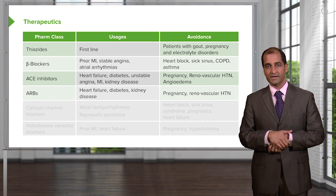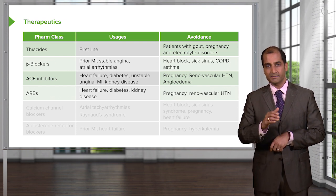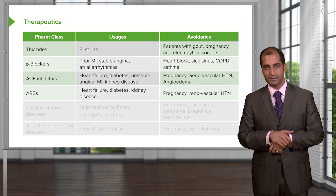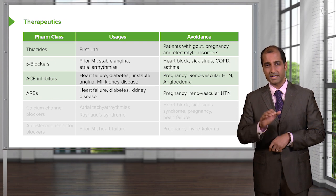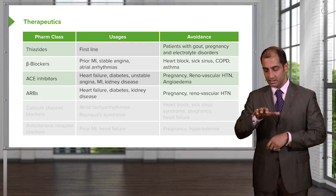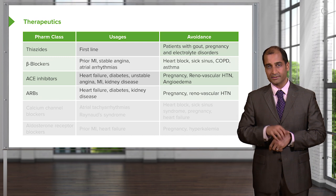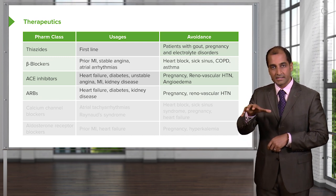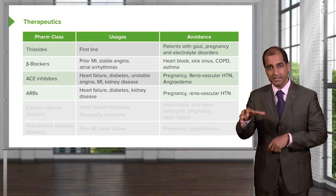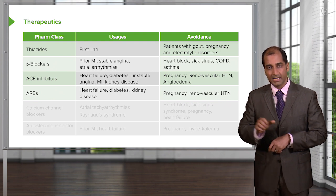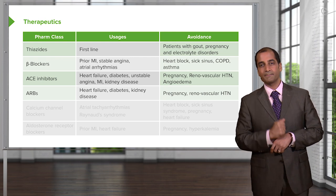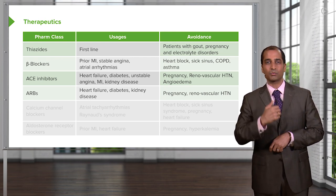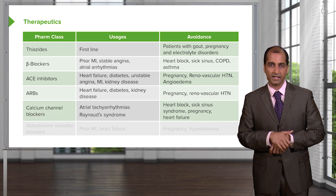ARBs: heart failure, diabetes, kidney disease — pretty much the same issues as ACE inhibitors. Calcium channel blockers: arrhythmia, and especially Raynaud syndrome. In Raynaud's, the patient walks out into the cold, the fingers may have aggregation — possibly cryoglobulinemia — and the digits become bluish and cyanotic. For that reason, you'd think about using a calcium channel blocker.